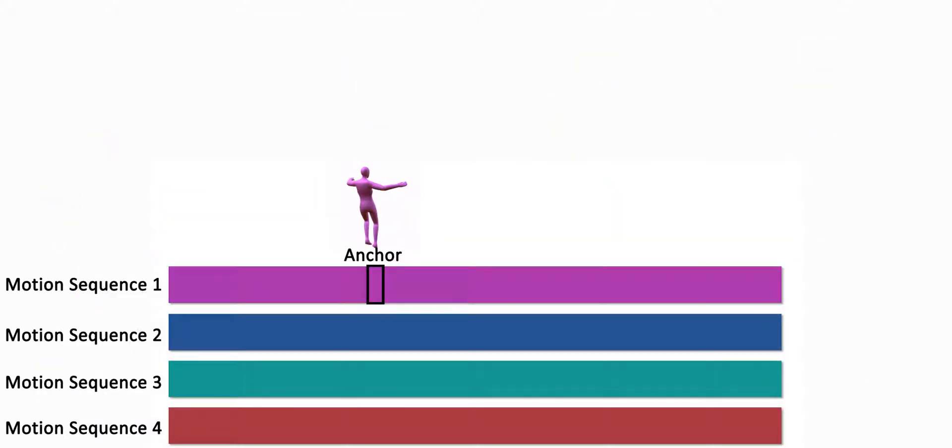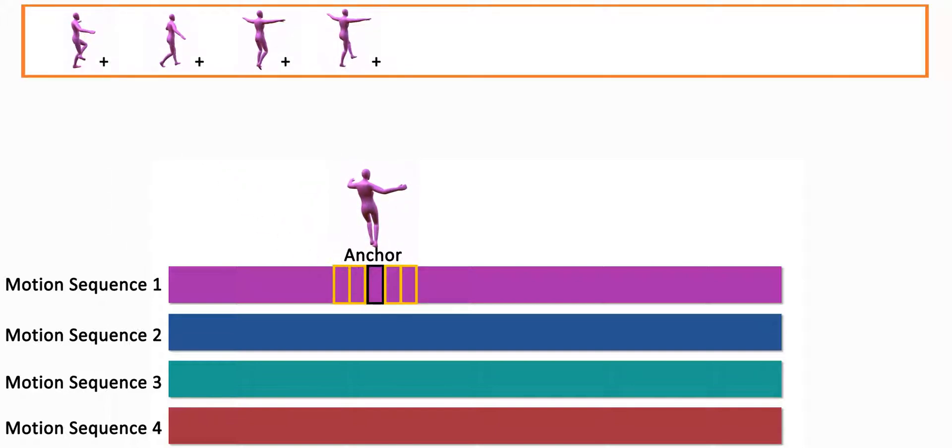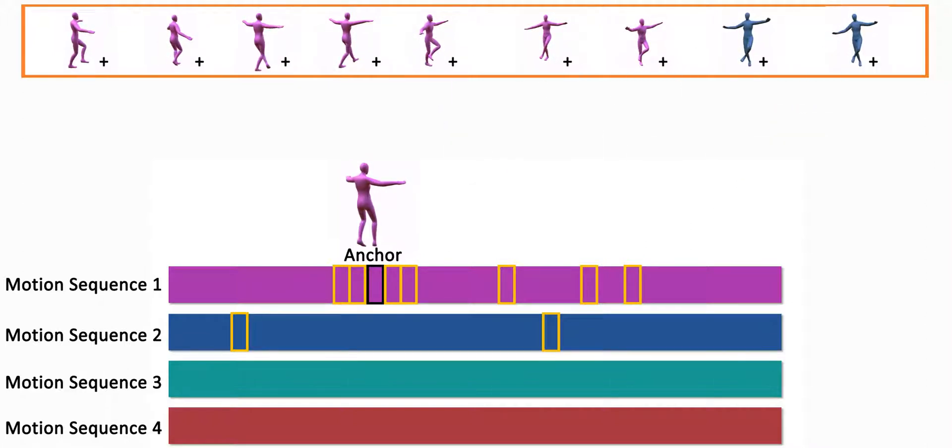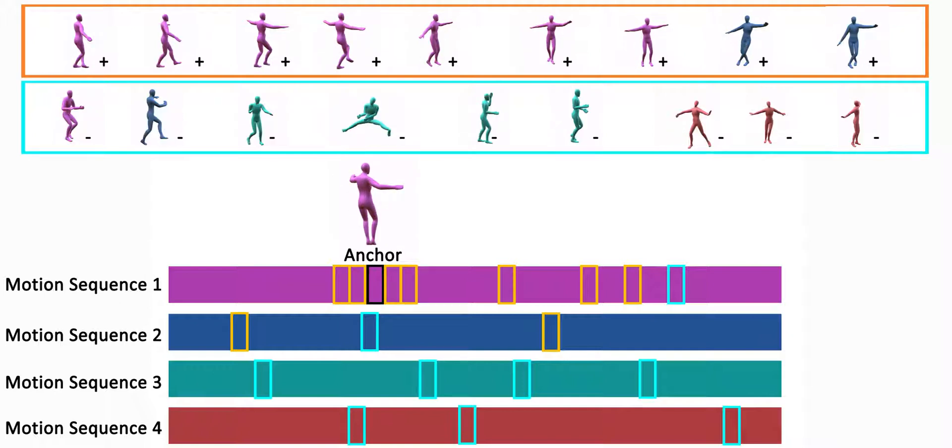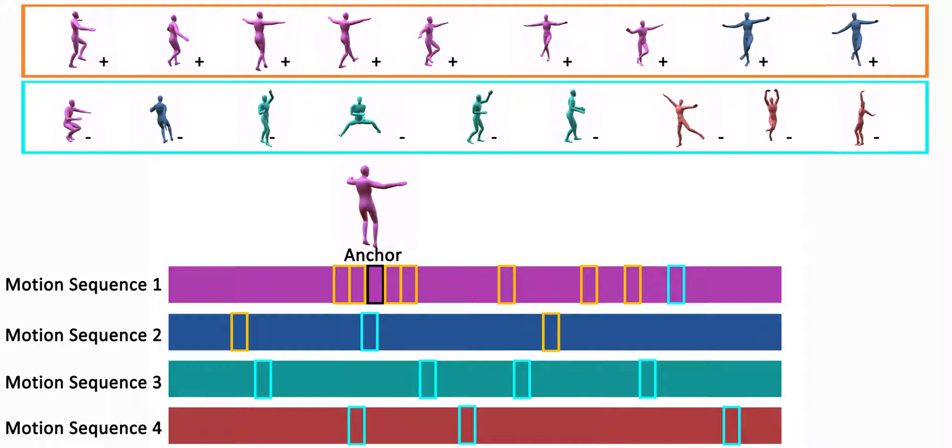In the training using the triplet loss function, positive examples are either motion words that appear temporally close in the training data, or words that match using dynamic time warping. Negative examples are random motion words that are either temporally or posturally dissimilar.